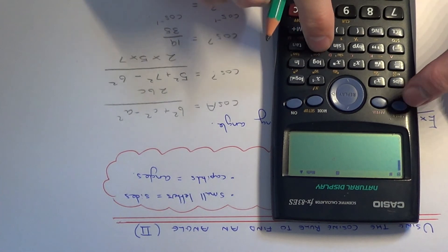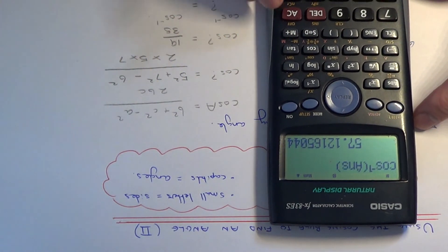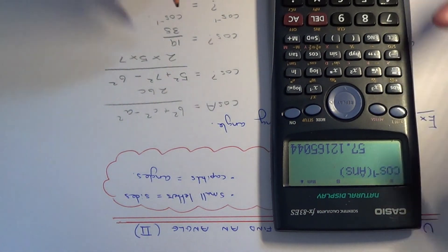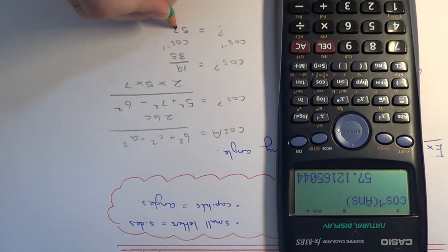So on your calculator, just cos inverse that fraction. So you get an angle of 57.1 degrees to 3 significant figures.